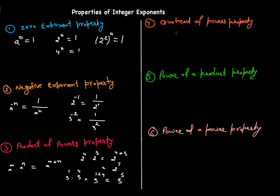The fourth property is the quotient of powers property. If you have a raised to power m divided by a raised to power n, you write the base and subtract the exponents: a raised to power m minus n. This can also be written as a raised to power m times one over a raised to power n. Since one over a raised to power n equals a raised to power negative n, you get a raised to power m times a raised to power negative n, which equals a raised to power m plus negative n, or m minus n.